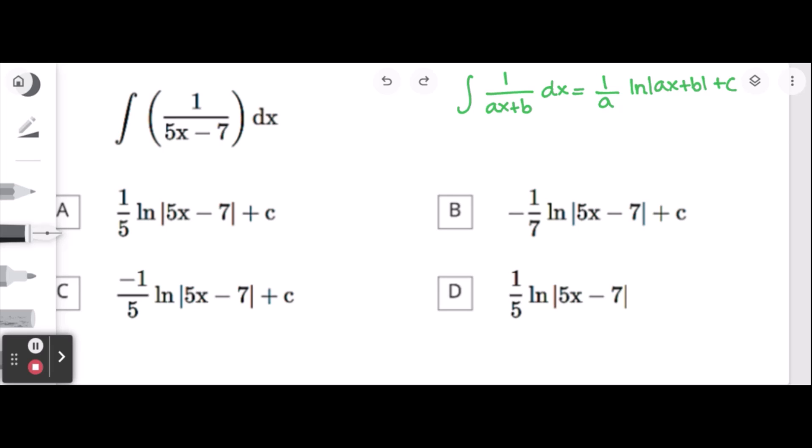The rule says the indefinite integral of 1 over ax plus b dx equals 1 over the coefficient of x which is a, then the natural log or ln of ax plus b plus c.